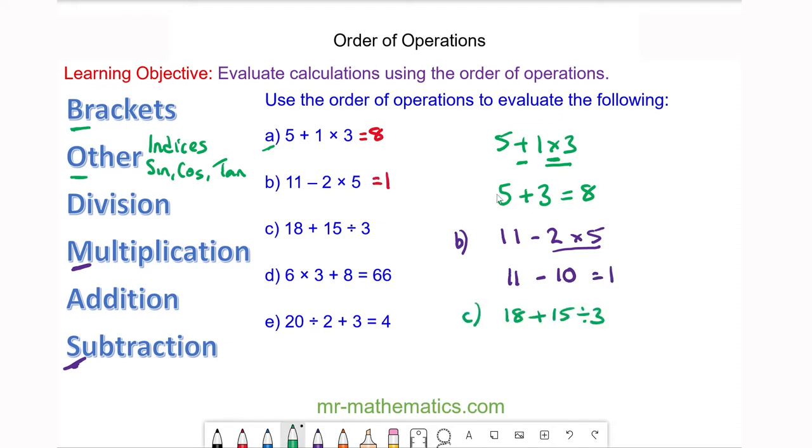For question c, we do the division before the addition. So we have 18 + 15 ÷ 3, which is 5, and 18 + 5 is 23.